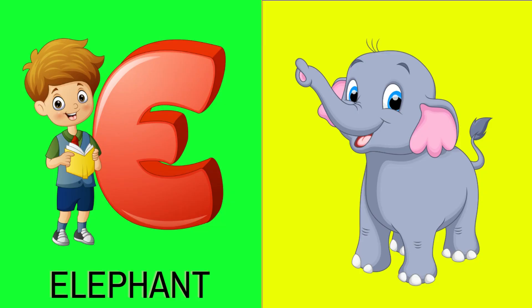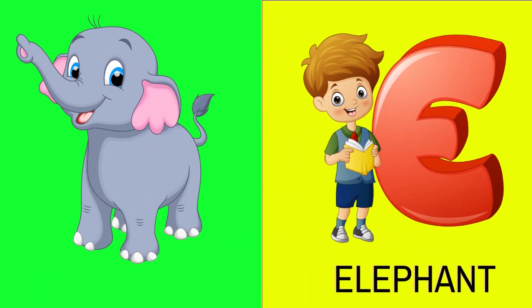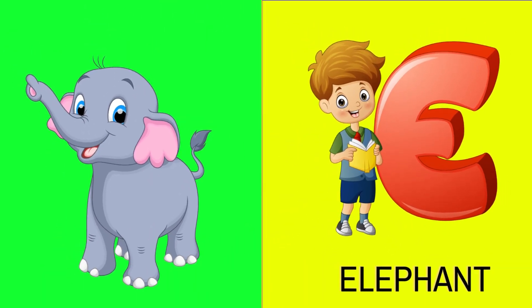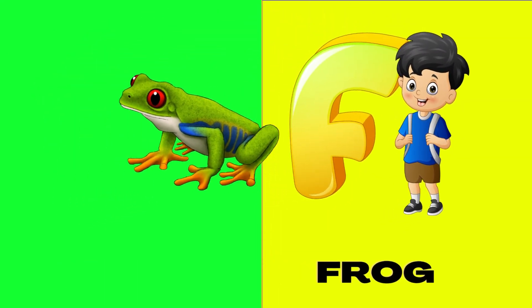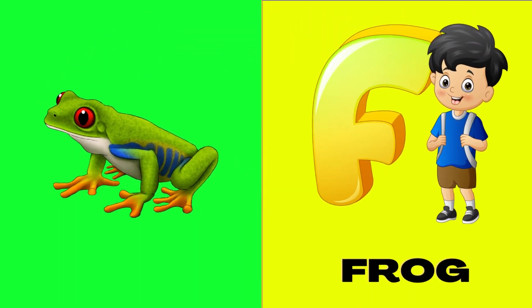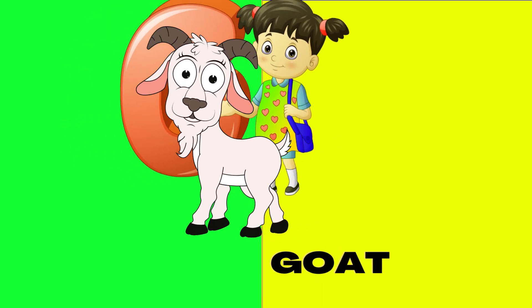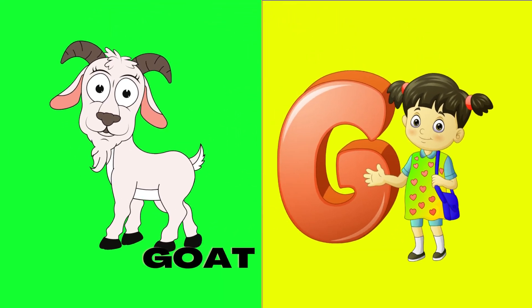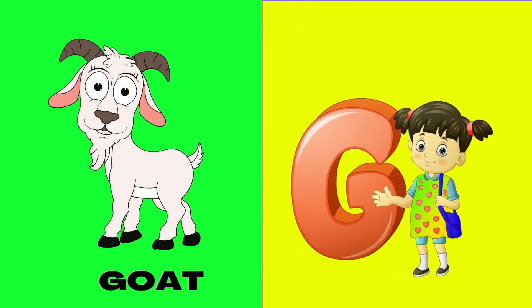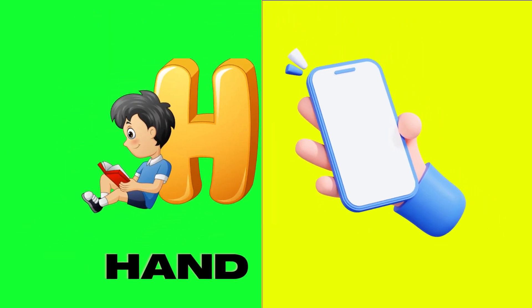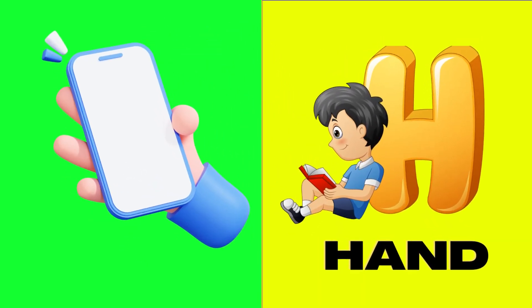E is for elephant, e-e-elephant. F is for frog, f-f-frog. G is for goat, g-g-goat. H is for hand, h-h-hand.